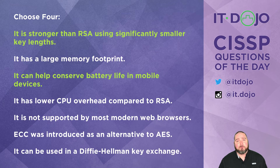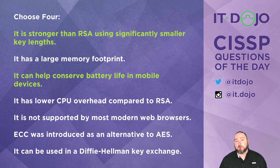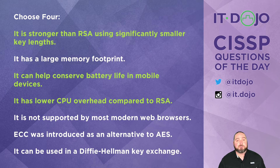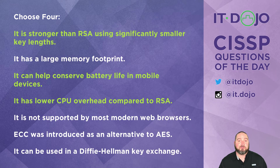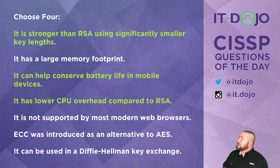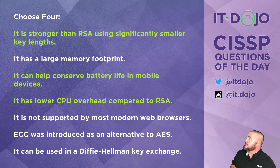Next option: ECC has lower CPU overhead compared to RSA — absolutely true. This is due in large part to the fact that it uses significantly smaller keys, and those smaller keys require less CPU effort than the much larger RSA keys we would typically encounter.